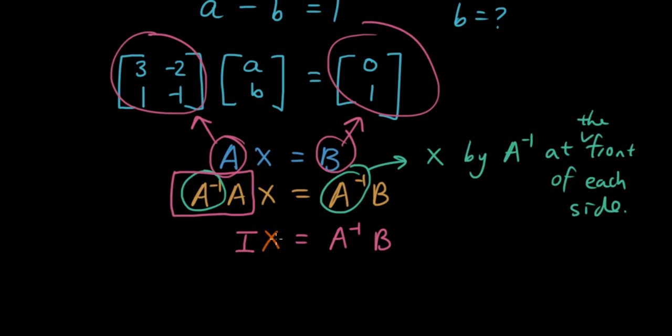And any matrix times by i is just the same matrix. So x is equal to the inverse of a times by b. Okay, so let's get back to our equation.